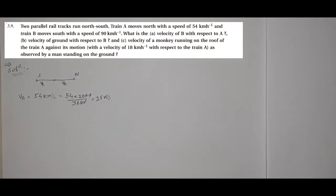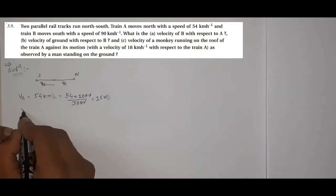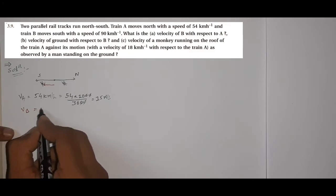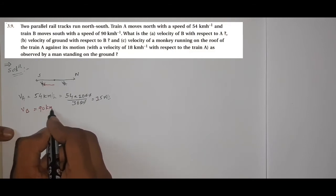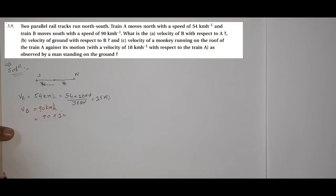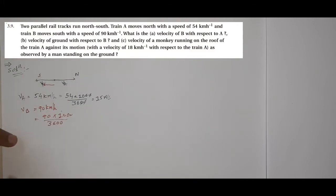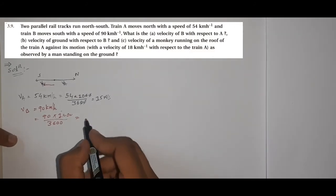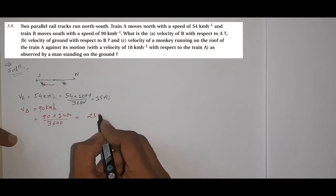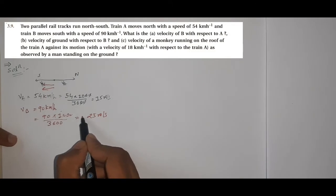Now see vB — which direction is it going? It is opposite to vA. So we take 90 × 1000 ÷ 3600, which gives 25 meter per second. But the direction is opposite, so we take a minus sign — it shows the opposite direction. So vB = −25 meter per second.